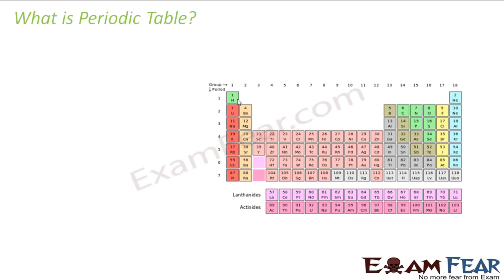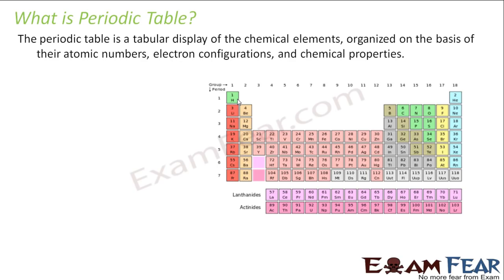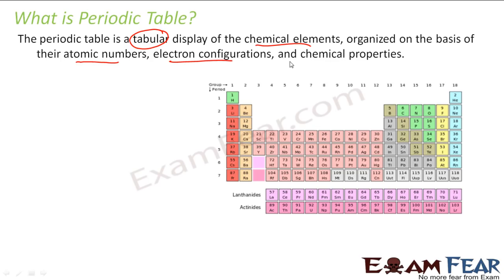The first question that should come to our mind is: what is periodic table? Periodic table is nothing but a tabular display of chemical elements, and they are organized based on their atomic numbers, electronic configurations, and their chemical properties.